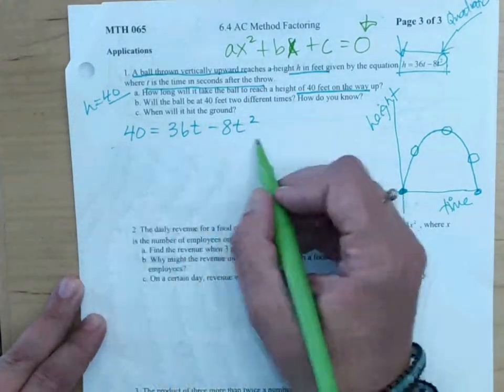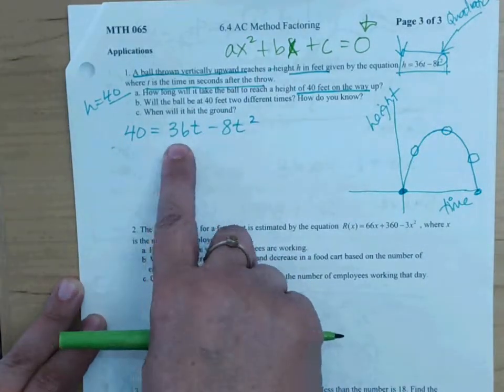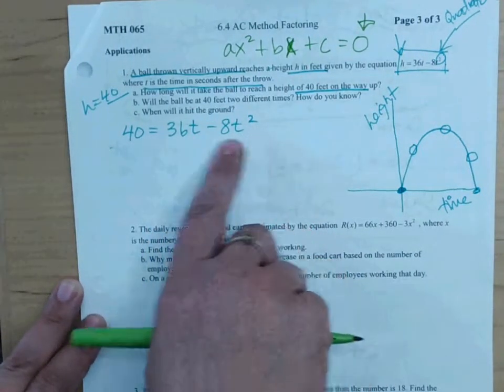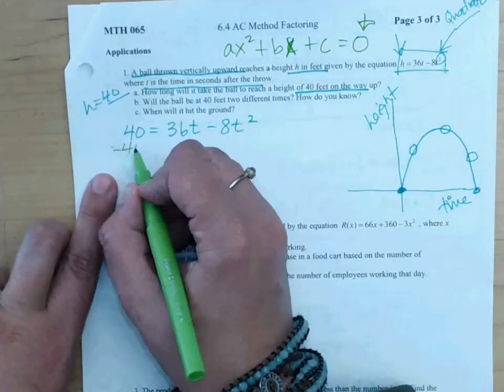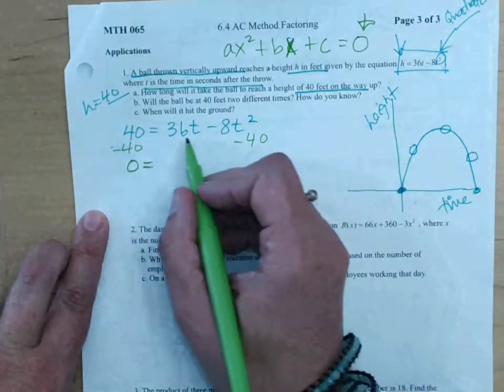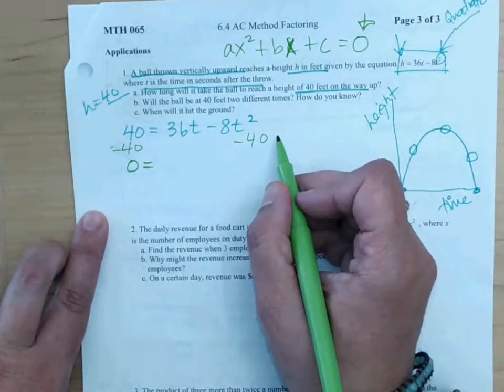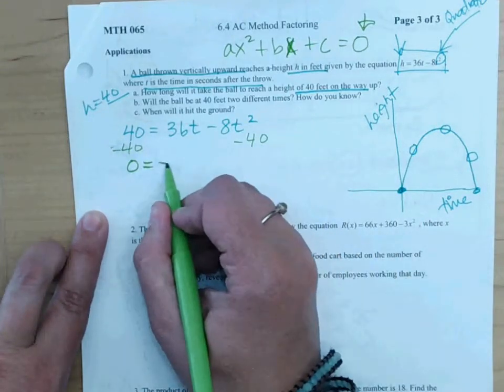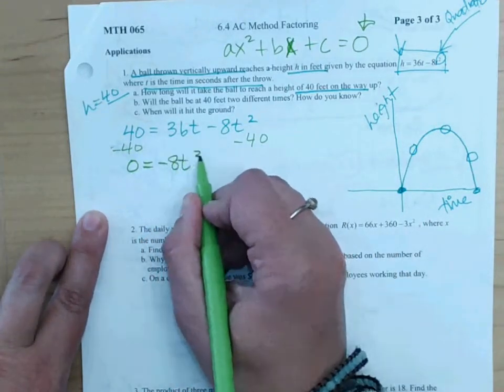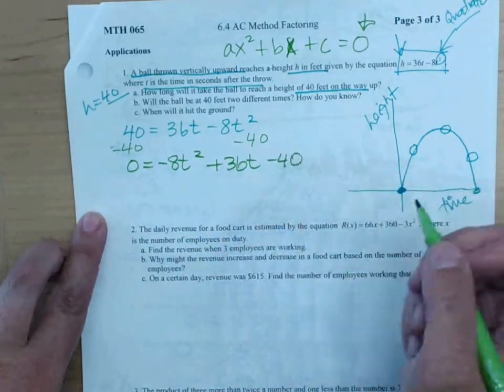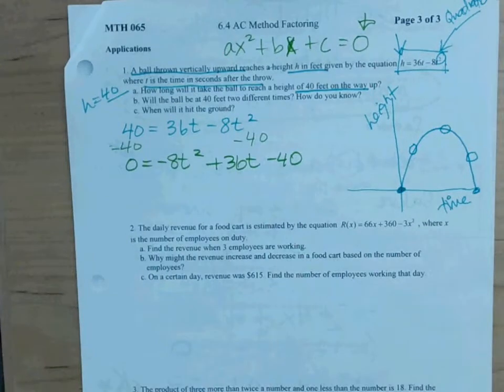ax squared plus bx plus c equals zero. So you always want to start by setting it equal to zero. What could I do to get zero on one side? So I would subtract 40 or I could subtract 36t and add 8t squared either way. So I'm going to subtract 40. That's one step. Subtract 40 and I get zero equals. Now, I want to put this in descending order. What would be the order if I could put it in descending order? Negative 8t squared plus 36t minus 40. Okay, so now this is ready to factor.